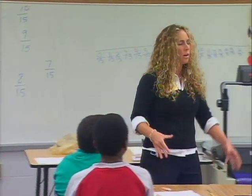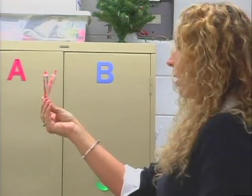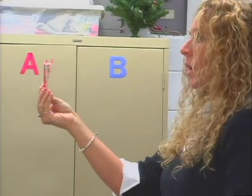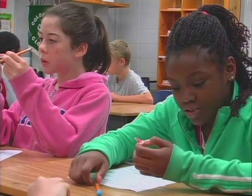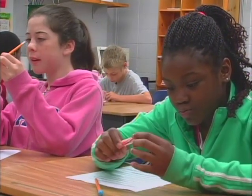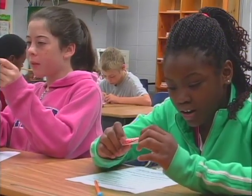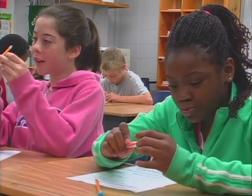There are three primary representations I can think of for fractions. One is a discrete model where we have, say, some M&Ms, and we want to ask what fraction of them are red. That does not scale up terribly well to looking at other models.